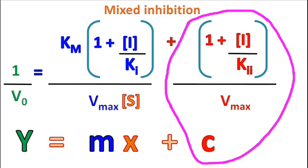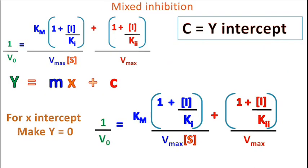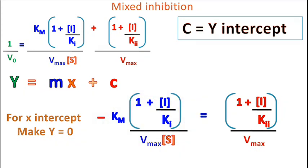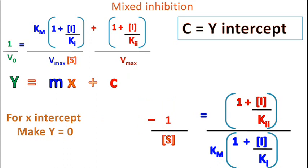To find the x-axis intercept, let's take 1 by v₀ equal to 0. The equation becomes minus Km times bracket 1 plus I upon KI upon Vmax times S is equal to 1 plus I upon KII upon Vmax. Rearranging, we get 1 by S is equal to minus 1 plus I upon KII, upon Km times bracket 1 plus I upon KI. This means in mixed inhibition, both Vmax and Km values have changed.